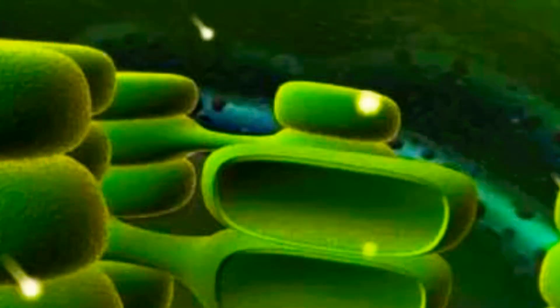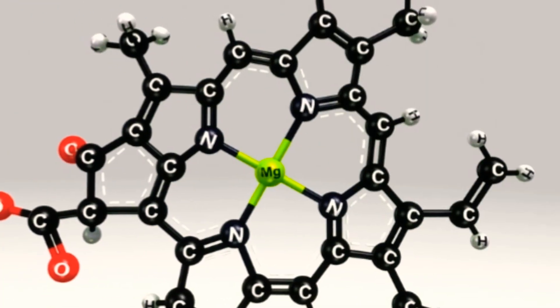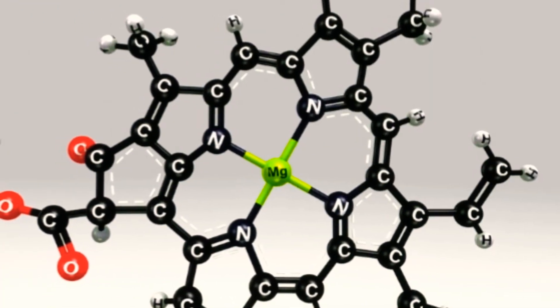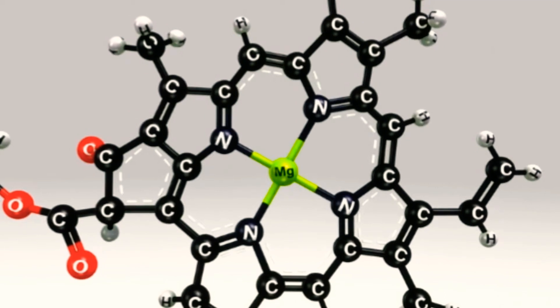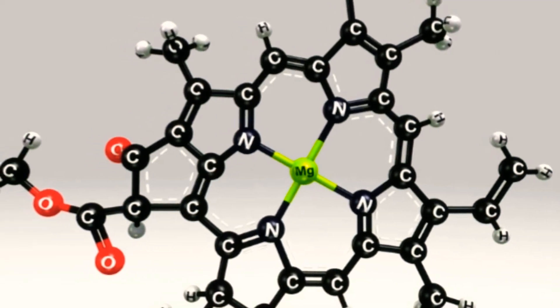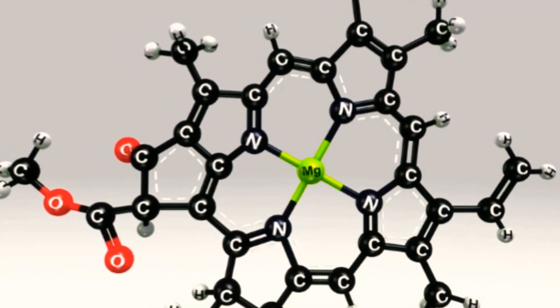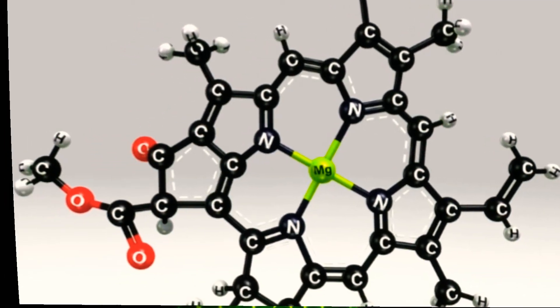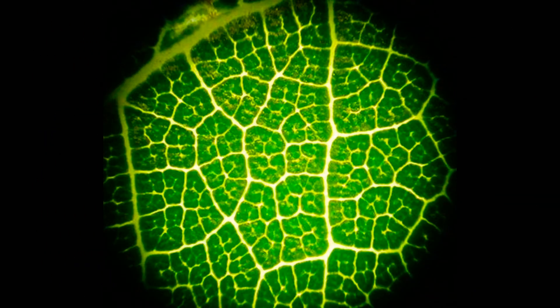Chlorophyll a absorbs light in the blue-violet region while chlorophyll b absorbs red and blue light. Neither absorbs green light because green is reflected or transmitted, which is why chlorophyll appears green. Chlorophyll refers to any of several green pigments found in organisms that perform photosynthesis.